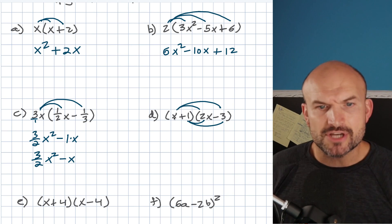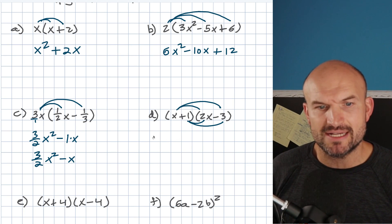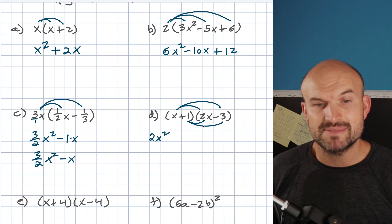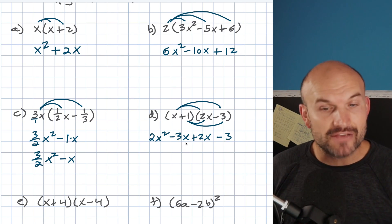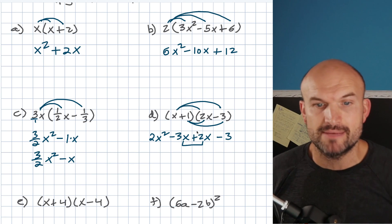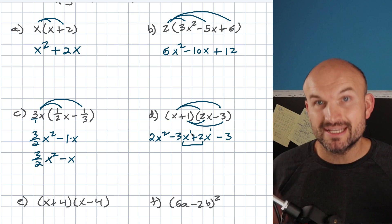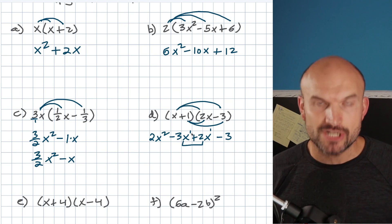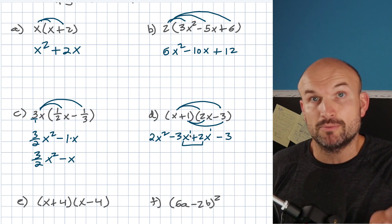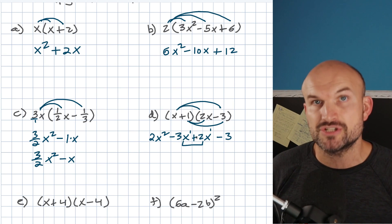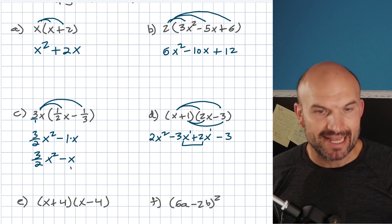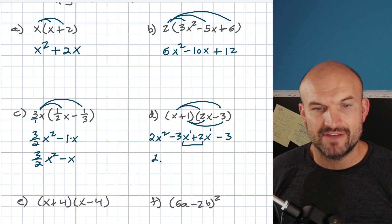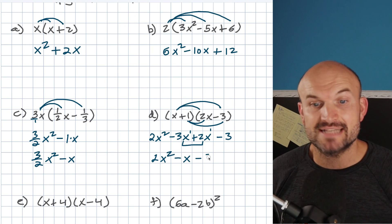Working through (X+1)(2X-3): X times 2X is 2X squared, X times negative three is negative 3X, one times 2X is positive 2X, and one times negative three is negative three. The middle two terms are like terms — they both have a variable raised to the first power, so we combine them. Negative three plus two is negative one X, which we write as negative X. So the answer is 2X squared minus X minus three.